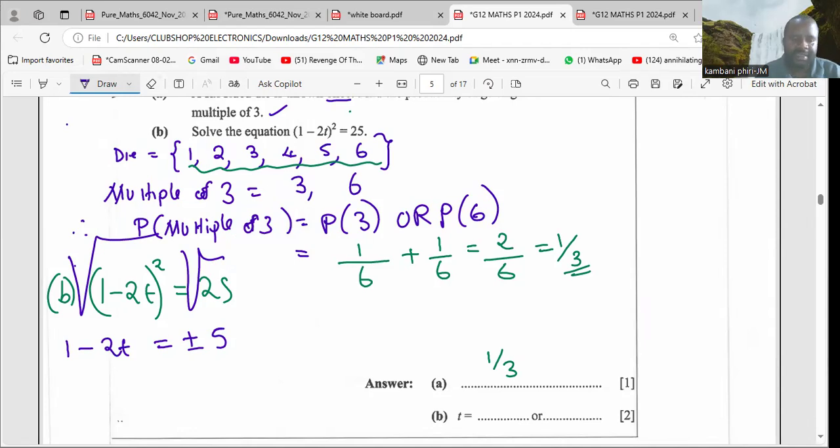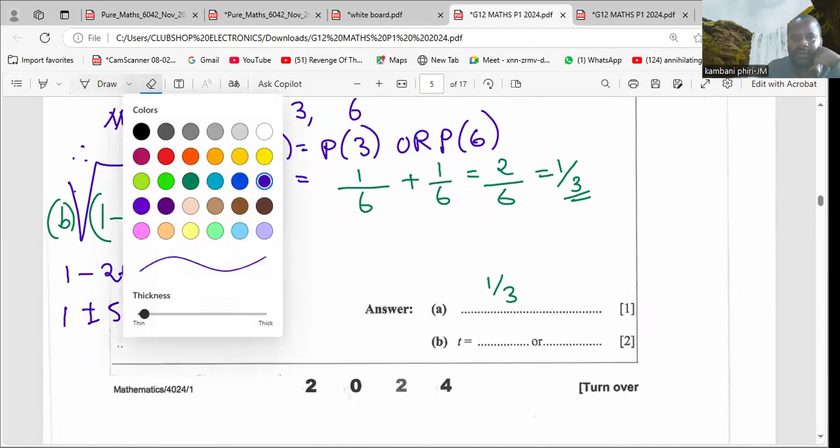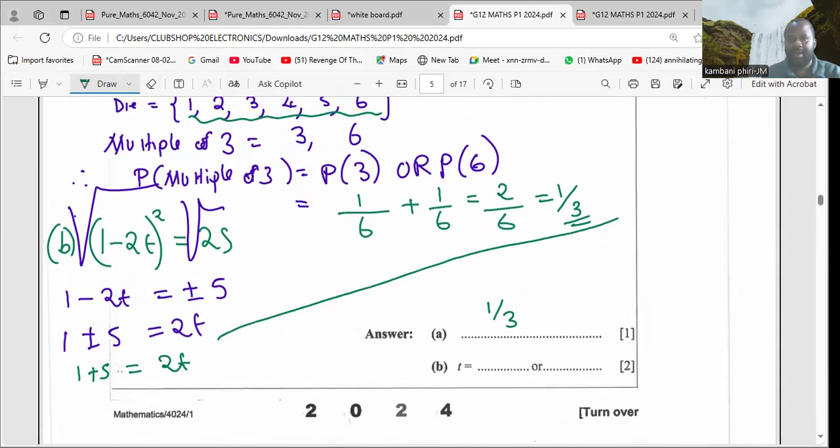This means that we can have one plus or minus 5 equals 2t. If we push the 2t to this side, you have one plus 5 equals 2t. Six equals 2t, so t equals 3.